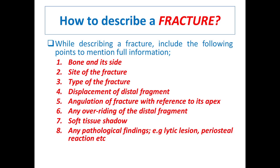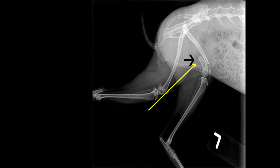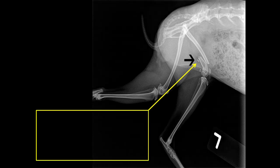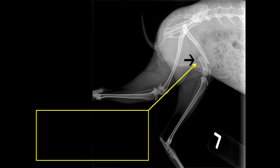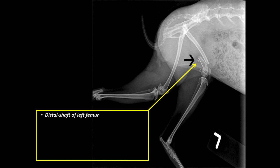The last point is pathological findings in bone, which may include lytic changes or periosteal reaction — discussed in detail in the previous video, link given below. Now let's look at the radiograph. This is a very important part of the video. First, identify the bone and its side — this is the left femur with the distal part involved. Then look at the type of fracture.